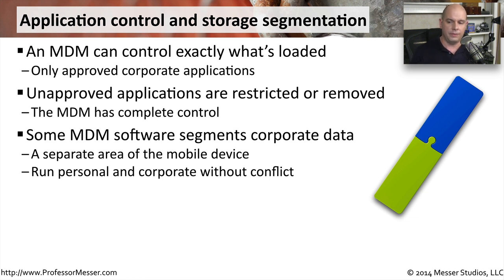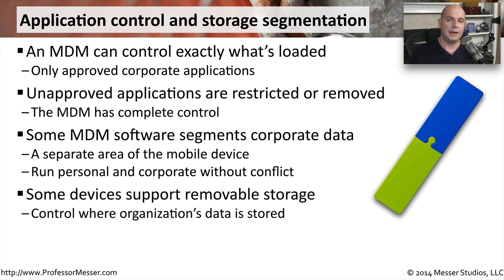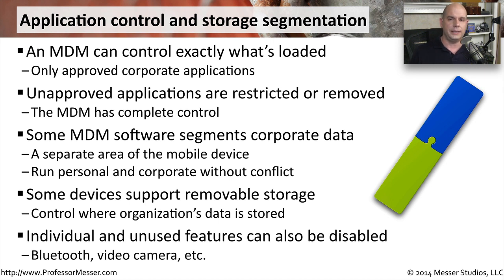Some phones and tablets have a slot for removable storage, so you can plug in storage, copy information to it, and then remove it. When it's removed, the mobile device manager has no idea where that removable data is. So you can configure your MDM to allow or disallow writing certain kinds of data to removable memory. Other features like Bluetooth and Wi-Fi can be enabled and disabled. You can even disable the camera functionality. Every piece of hardware and software inside that mobile device can always be managed from the mobile device manager.